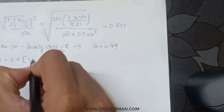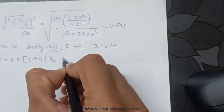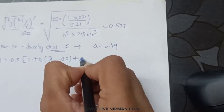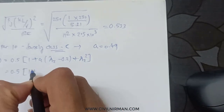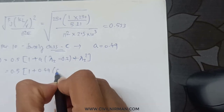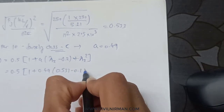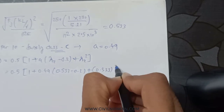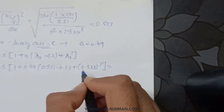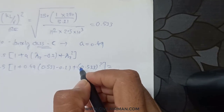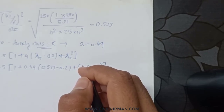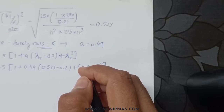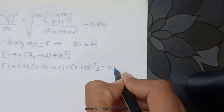Now we will work out the phi value using the equation: φ = 0.5 × [1 + α(λ − 0.2) + λ²]. Substituting: φ = 0.5 × [1 + 0.49 × (0.533 − 0.2) + 0.533²]. This gives φ = 0.5 × [1 + 0.49 × 0.333 + 0.284] = 0.724.